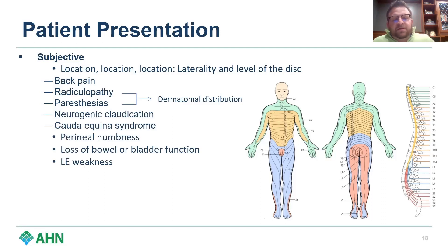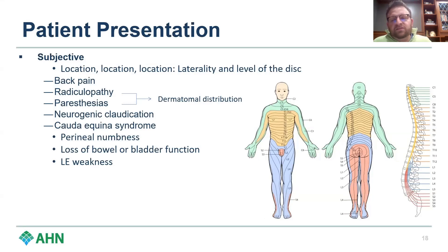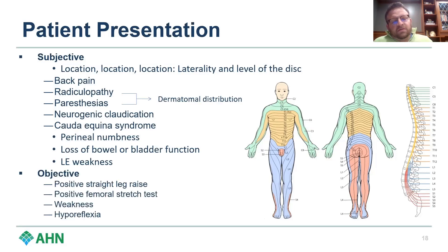You also want to think about other presentations with disc herniation, such as neurogenic claudication — seen more classically in the elderly — and cauda equina syndrome, which involves perineal numbness, loss of bowel and bladder function, and lower extremity weakness. It's a three-for-three syndrome; you need all three findings. More chronic cauda equina syndromes can occur with chronic compression over time, but the classic presentation is a massive disc herniation in a young person leading to acute symptoms.